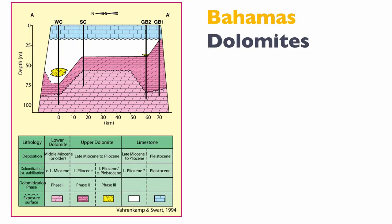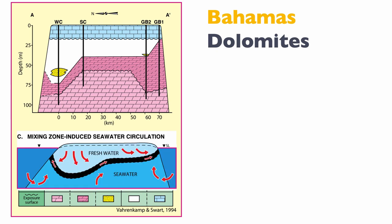Do we have any evidence in the Bahamas for one or the other model? Varenkamp and Swart think they have some evidence. Looking at the dolomitization of the Bahamas, you can see different phases — an early to late Miocene and a late Pleistocene dolomite. What's important is the geometry of that dolomite body, which is quite asymmetrical from one side of the Bahamas to the other. The geometry expected by the freshwater lens model is very similar to what is found in the cores. So Varenkamp and Swart concluded that for the Bahamas, the freshwater lens model is more likely than a purely geothermal heat model.